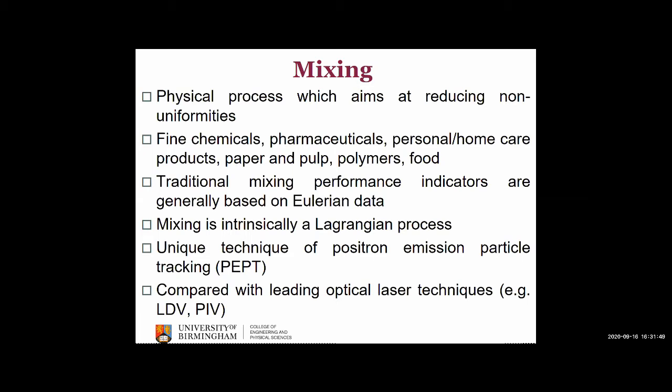Several techniques have been developed over the years for obtaining qualitative and quantitative measurements of fluid flow in mixing processes. All previous mixing measurement techniques are based on the Eulerian approach. The inherent Eulerian nature of such measurement methods does not allow ready access to the Lagrangian character of the flow or the structures present in the system. While Eulerian data are crucial, Lagrangian information is necessary for the whole description of the mixing phenomenon.